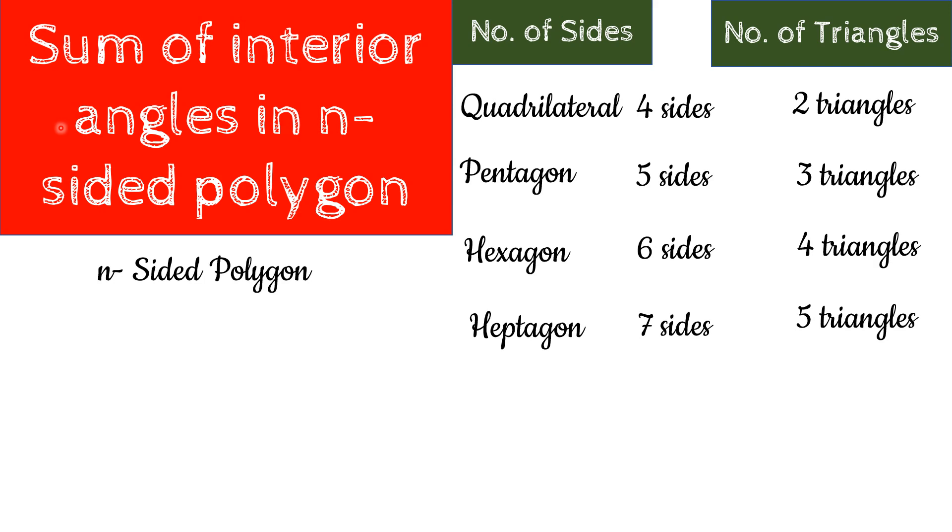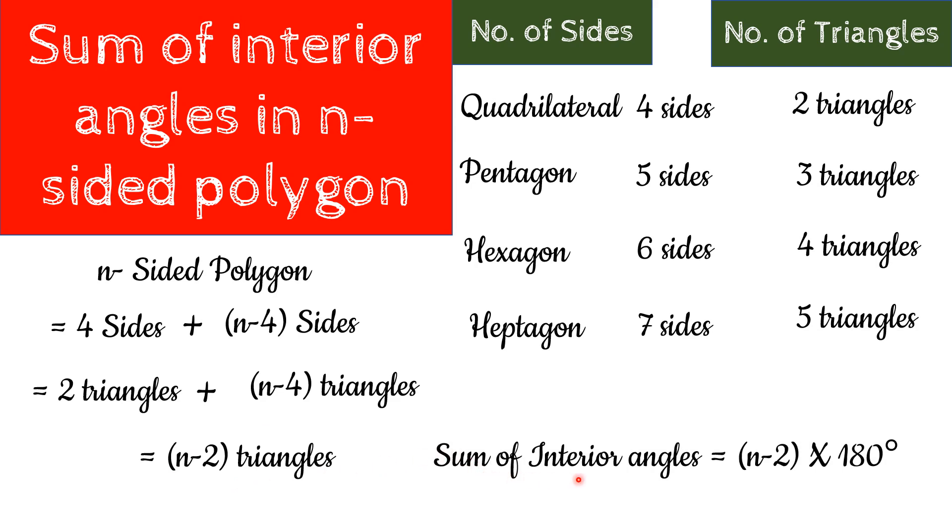For a n-sided polygon we can divide it into two parts: four sides plus remaining side that is n-4 side. We are getting two triangles from first four sides, then each extra sides give us one more triangle. Here, we have n-4 extra sides. So, it will give us n-4 more triangles. So, after adding it, we get n-2 triangles in our n-sided polygon. If we have n-sided polygon then we can fit n-2 triangles. So, total sum of interior angles of the polygon is going to be n-2 times 180 degree.